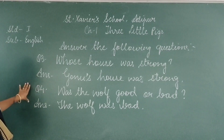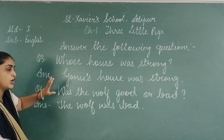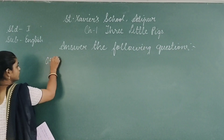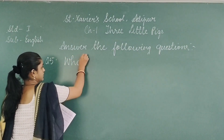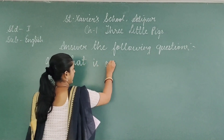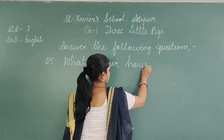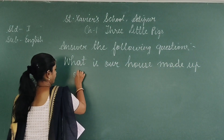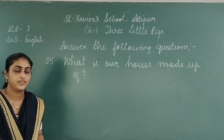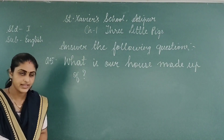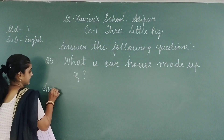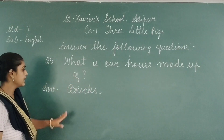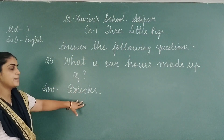I hope you have written these two questions. Let us move on to the last question. There are five questions in this chapter. What does the last question say? What is our house made of? So you are going to write the answer: B-R-I-C-K-S, bricks. Our house is made up of bricks.